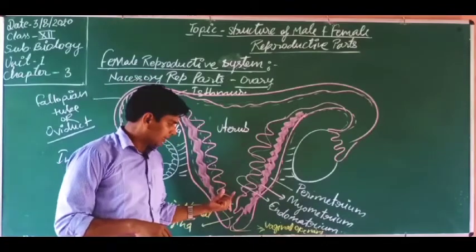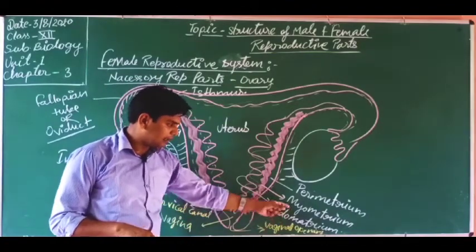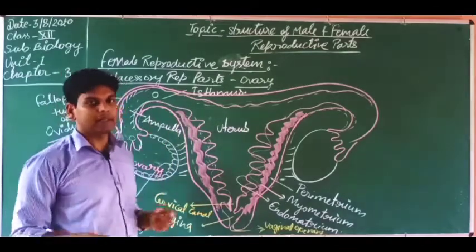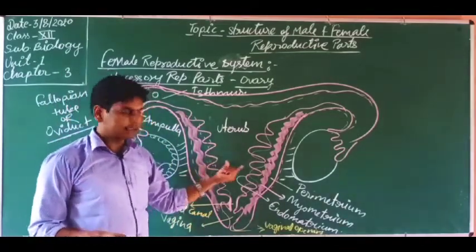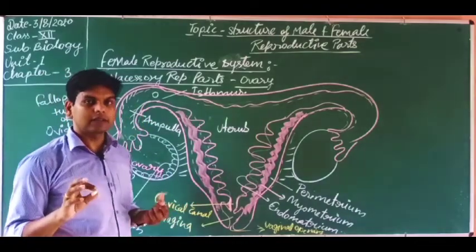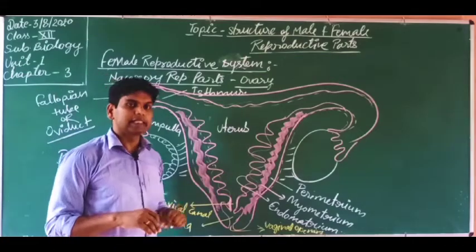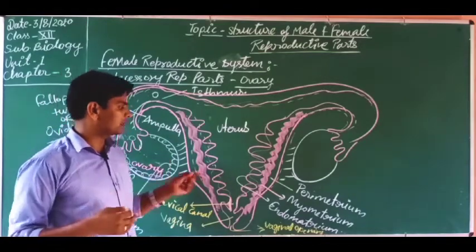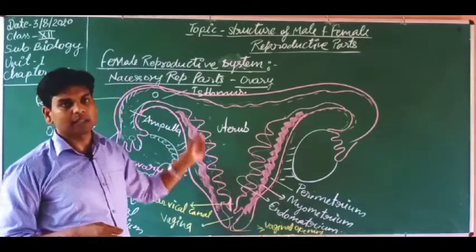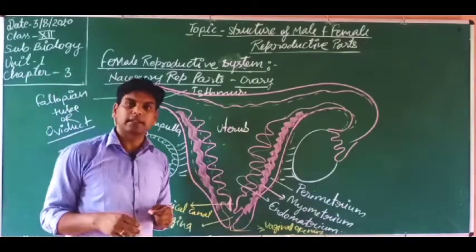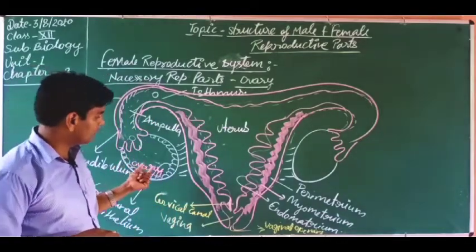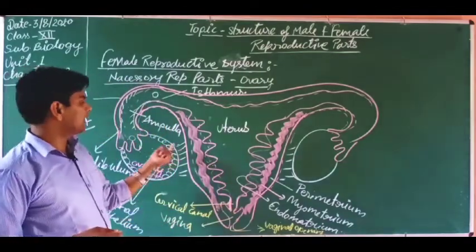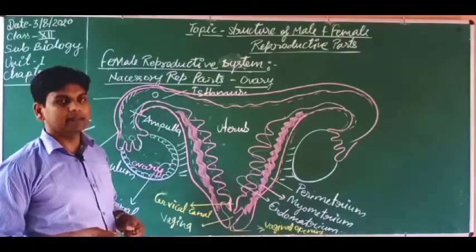The myometrium plays a very important role. At the time of delivery, when the embryo has developed into a baby inside the mother's uterus, the myometrium contracts and relaxes due to the presence of strong muscles. These muscles contract very strongly and frequently, pushing the baby outside from the female body — this process is known as parturition, or the birth of the baby. The perimetrium is the outermost covering; it covers the endometrium and myometrium and is protective in nature.